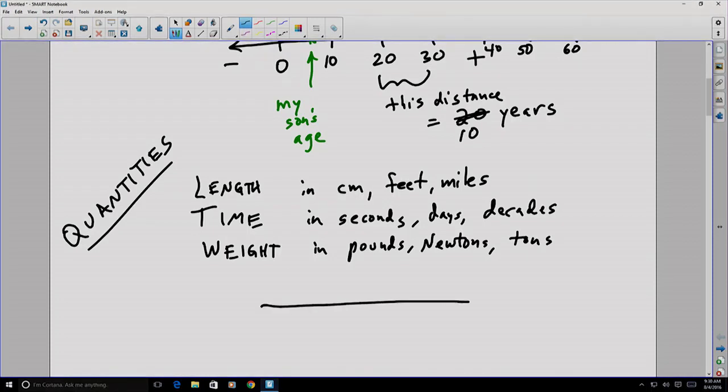For example, one inch might be the same as 2.54 centimeters. Notice, similar quantities, they're both lengths, but we're using different units to represent the same scalar value.